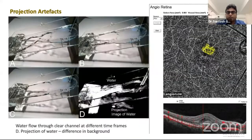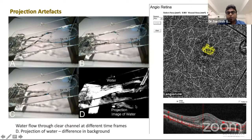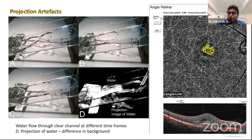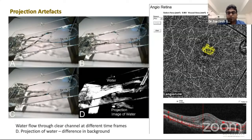A word on projection artifacts — it's like a flow that happens on a static background, when water flows against a static background. There is bound to be a reflection that happens on the deeper layers, on the vessels of DCP and the SCP. On the CC slab it doesn't mean it's an entirely different layer — that we need to keep in mind. Similarly, CNVM at the CC layer or the outer retina can also be seen even in the superficial layers; that is a decorrelation artifact. We need to keep these things in mind when interpreting CNVM complex or lesions that arise in the deeper retinal layers.